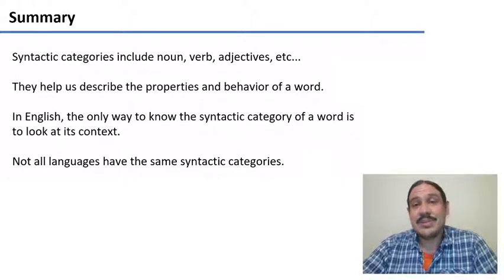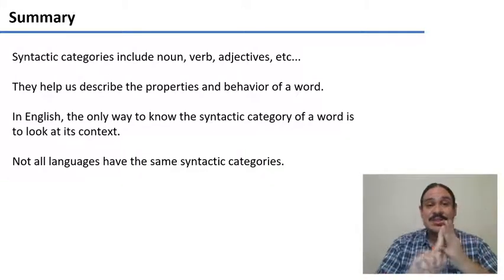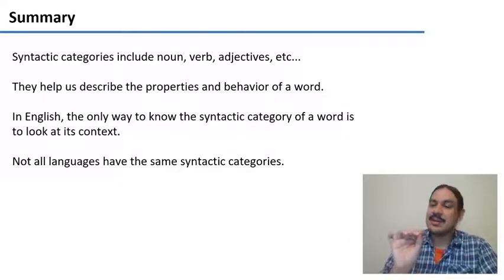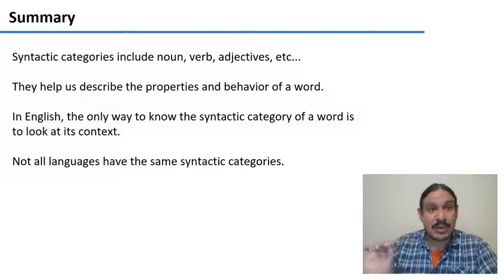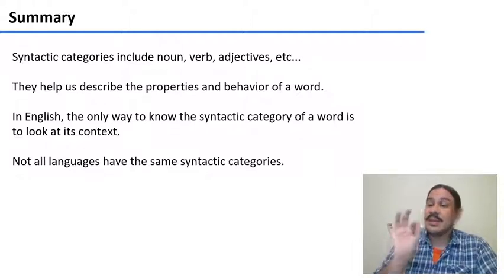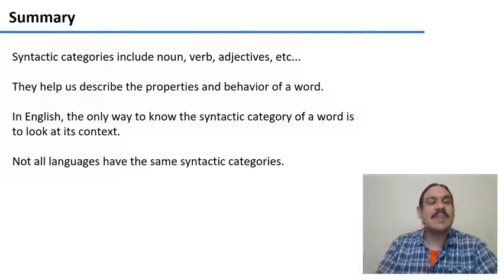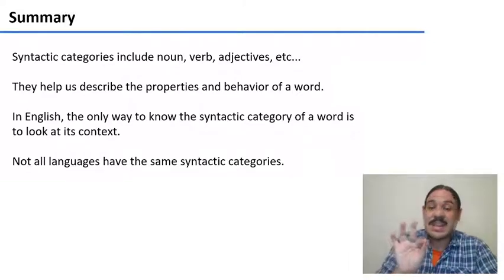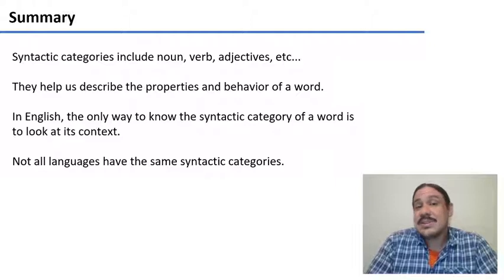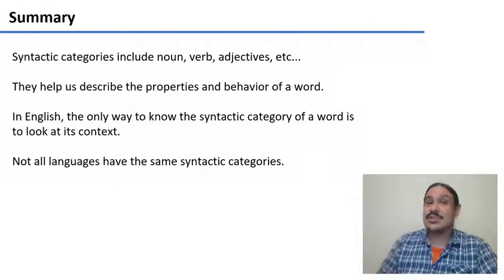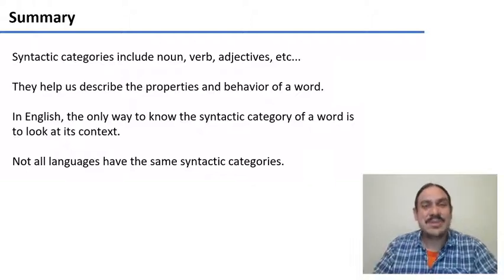In summary, syntactic categories include categories like nouns, verbs, adjectives, and so forth. They help us describe the behavior of a word in a sentence — what it can be accompanied by, and what positions it can occupy. In English, the only way to know a word's syntactic category for sure is by looking at the word and its context, and sometimes we need to perform tests like replacing the word with 'do' or a pronoun like 'it.' Finally, not all languages have the same syntactic categories — Japanese might not have adjectives, and Cook Islands Māori has tense-aspect-mood markers which English does not have. In the next video, we will start with syntax.